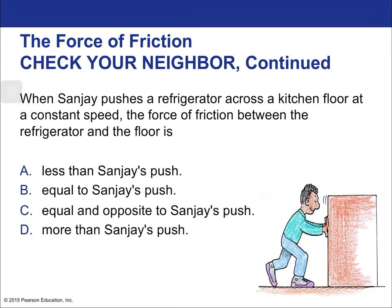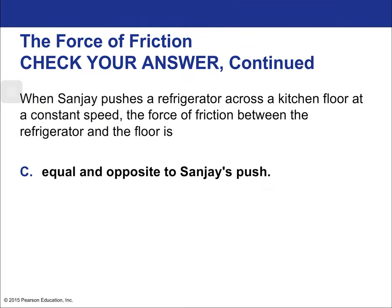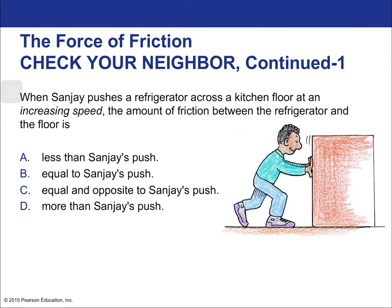When Sanjay pushes a refrigerator across the kitchen floor at a constant speed, the friction force between the refrigerator and the floor must be equal to his push. Newton's first law — the law of inertia — tells us that an object remains in motion at constant speed unless an external force acts on it. For constant speed, the net force must be zero, so friction is equal and opposite to Sanjay's pushing force.